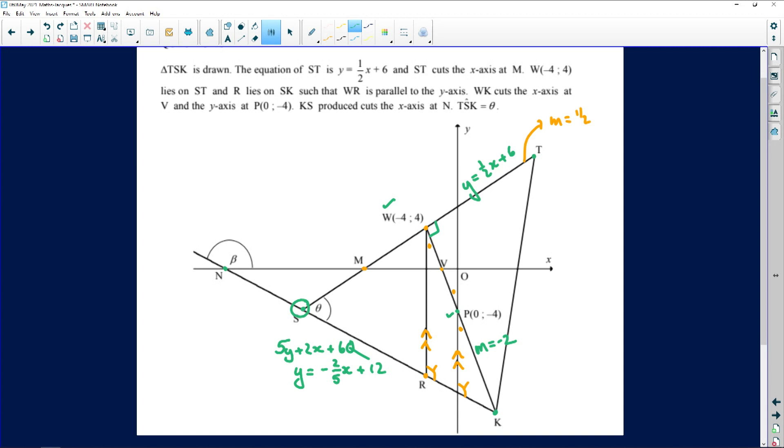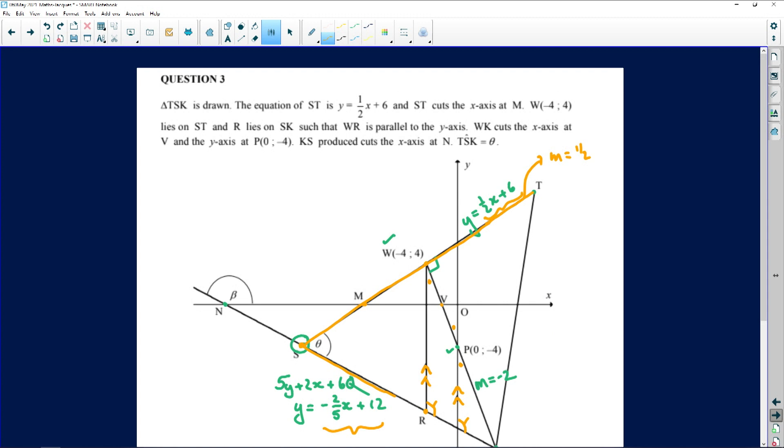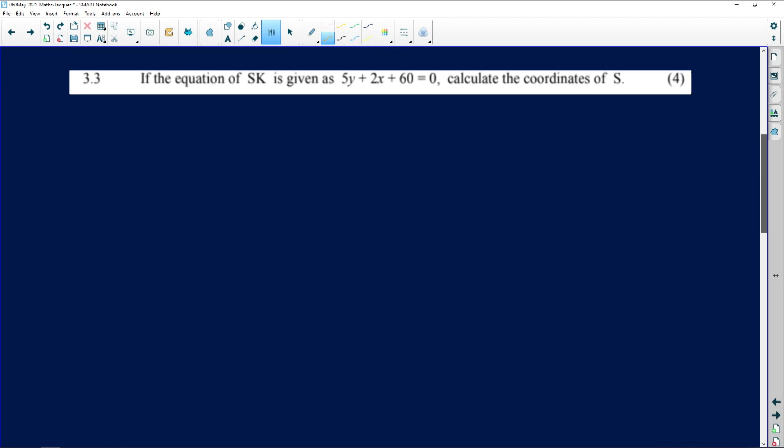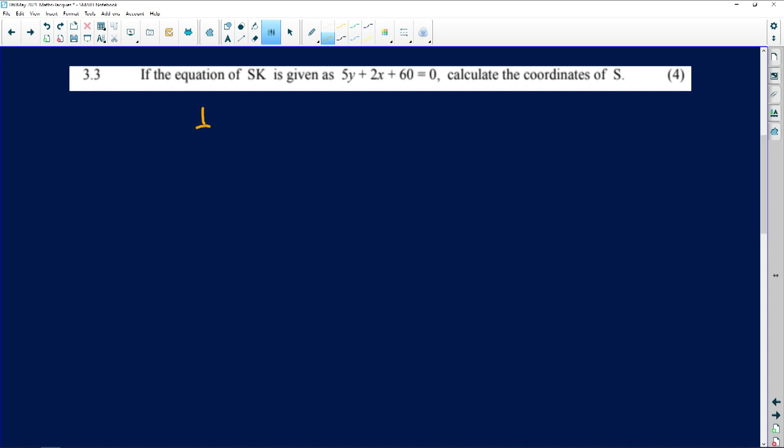Now look at what they're asking us. They're asking us to find the coordinates of S. Now folks, what happens at S? We can see at S that this line is intersecting with this line. So I'm going to make them equal. I've already got their y values by itself. So I can just quickly solve for x and come back and solve for y. We do that. Our one equation was a half of x plus 6 equals minus 2 fifths of x plus 12.